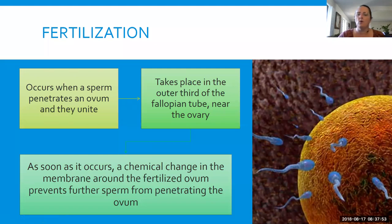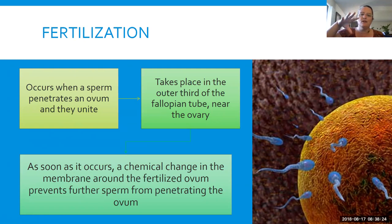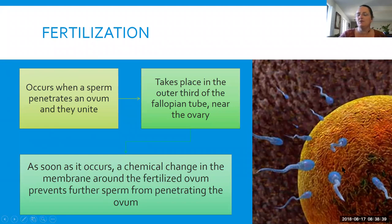Fertilization actually takes place when one of these sperm enters the body of the cell. Once the head enters, the tail kind of falls off and that genetic material is deposited into the cell. That's when we say fertilization has happened and new life has been created. It usually takes place somewhere in the fallopian tube. The egg explodes out of the ovary, finds its way into the fallopian tube, the sperm comes up and meets it, and if it's fertilized it will start to roll back down towards the uterus.